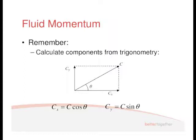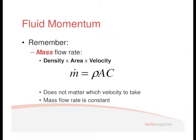The second important thing to remember is the mass flow rate. We did a lot with volumetric flow rate V dot, where V dot equals AC. Mass flow rate M dot equals rho times A times C. In a pipe or similar system, M dot is constant. When determining mass flow rate, it doesn't matter which velocity you use — the area compensates — because the mass flow rate is constant throughout the system.